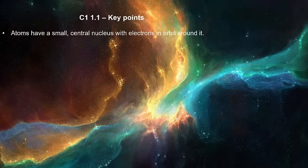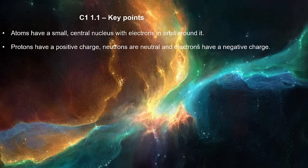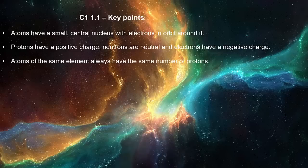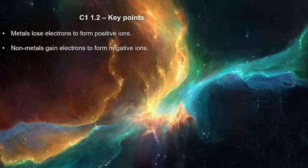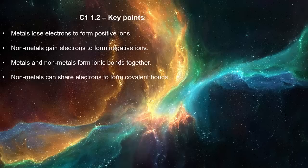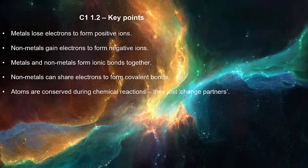Atoms have a small central nucleus with electrons in orbit around it. Protons have a positive charge. Neutrons are neutral and electrons have a negative charge. Atoms of the same element always have the same number of protons. Metals lose electrons to form positive ions. Non-metals gain electrons to form negative ions. Metals and non-metals form ionic bonds together. Non-metals can share electrons to form covalent bonds. Atoms are conserved during chemical reactions — they just change partners.